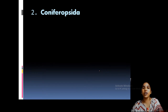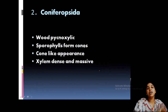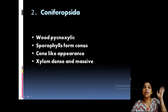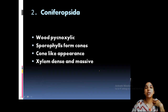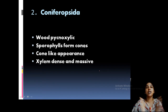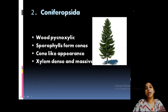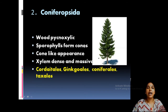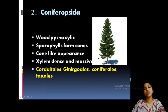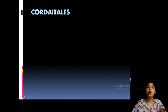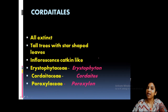The next class is Coniferopsida. The wood is pycnoxylic — meaning dense, thick xylem groups — unlike Cycadopsida where wood is manoxylic. Here the sporophylls form cones and plants appear pyramidal in shape, like a Christmas tree. Coniferopsida includes four orders: Cordaitales, Ginkgoales, Coniferales, and Taxales.